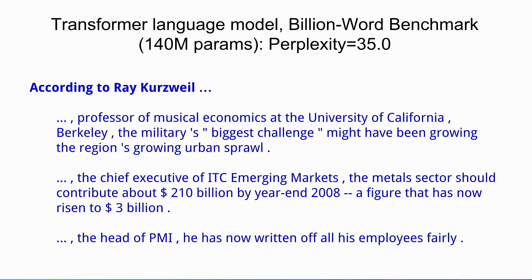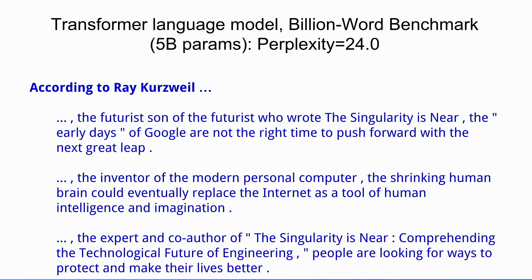As some examples, the OpenAI language model was something like 150 million parameters. I trained a model about that size on the billion word language modeling benchmark and told it to randomly generate text starting with 'According to Ray Kurzweil.' It's clearly grammatical, but there are some pretty big shortcomings in understanding of the world — the University of California, Berkeley does not have a musical economics department. But if you make the same model a lot bigger by increasing the sizes of the layers, here's a similar model with 5 billion parameters, and it seems to know a heck of a lot more about the world.